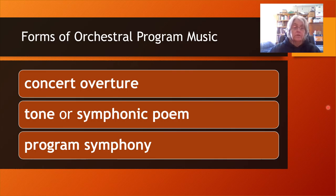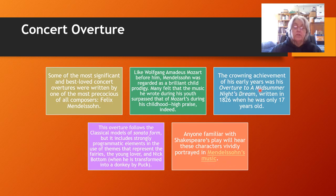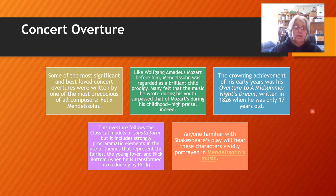Common forms of orchestral program music include the concert overture, the tone poem (also called a symphonic poem), and the program symphony. Felix Mendelssohn is well known for writing concert overtures — very, very popular. One you can hear by clicking the link is the overture to A Midsummer Night's Dream. He wrote a set of instrumental pieces to go with Shakespeare's play, and this overture really demonstrates that he captures the story of the fairies in A Midsummer Night's Dream.